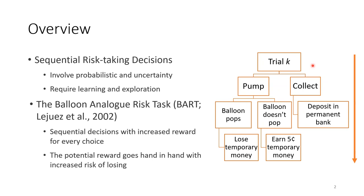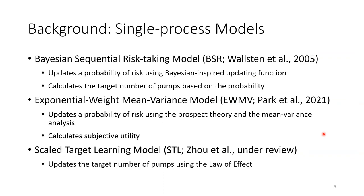The Balloon Analog Risk Task, or the BART, is one of the most widely used sequential risk-taking tasks. It involves sequential decisions with increased reward for every choice, and the potential reward goes hand-in-hand with increased risk of losing. To get more information from the task and depict the underlying cognitive processes, computational models have been developed. Most existing models of the BART assume a single response pathway that is controlled and attention-demanding, describing deliberate and calculated decision processes. We refer to them as single process models.